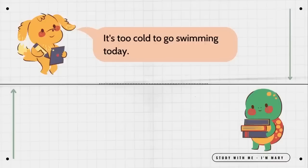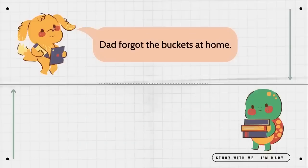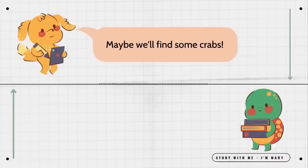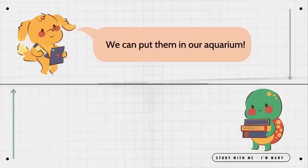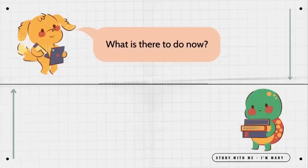It's too cold to go swimming today. That's okay. We can make a sand castle. Dad forgot the buckets at home. We can explore the tide pools. Maybe we'll find some crabs. I think I'd like a seahorse better. We can put them in our aquarium. That's a great idea. How will we carry them without buckets? I forgot. We don't have any. What is there to do now? Wait until it's time to go home.